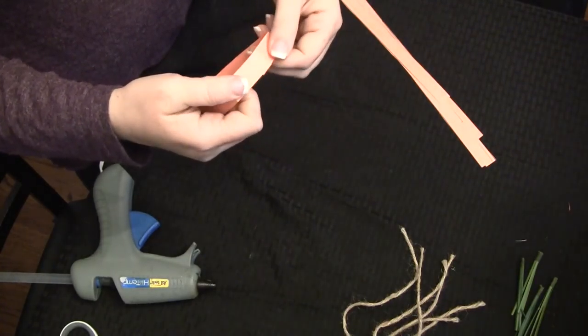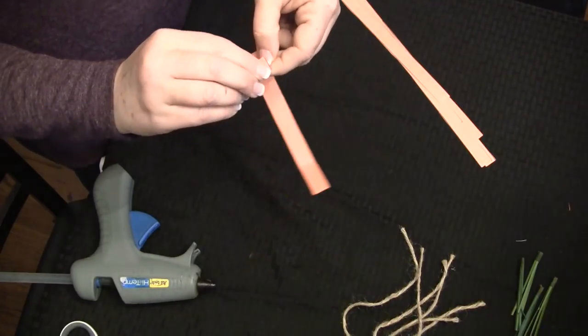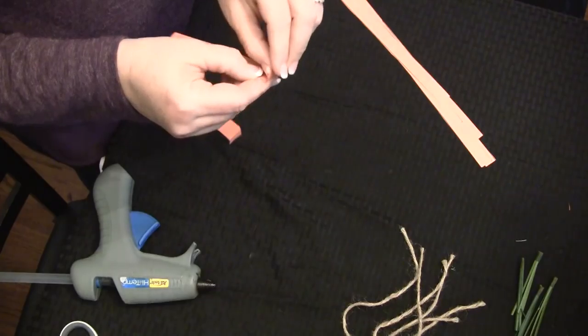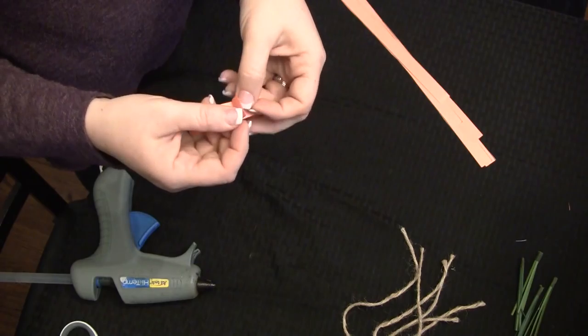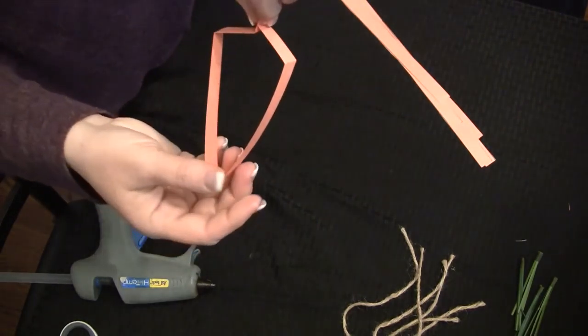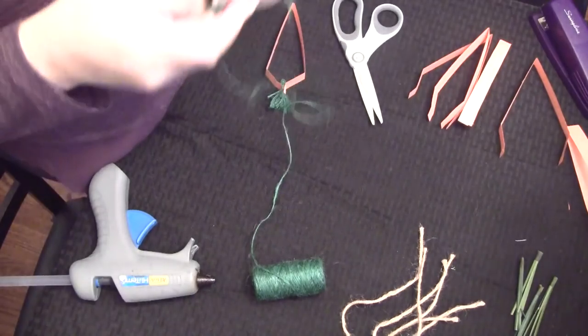So now about a half an inch down you're just going to fold it backwards just a little bit. And this is just where we're going to attach the glue. So we're going to take a little dot of hot glue and stick these together and that will be our little carrot for the garland that we're making.